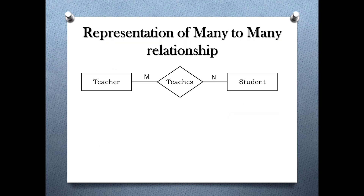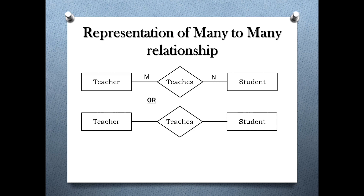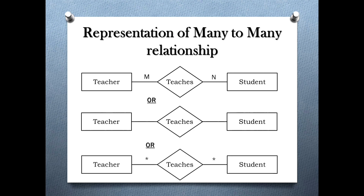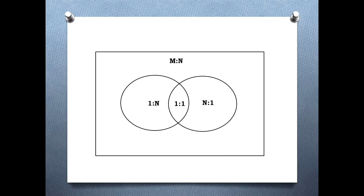Representation of many to many relationship: In an ER diagram, it is represented either by writing 'm' and 'n' on the two sides of the relationship set, or writing nothing also denotes many to many. Sometimes, an asterisk is also used. We can represent the different types of mapping cardinality using a Venn diagram — every relationship comes under many to many, and one to one relationship is the intersection of one to many and many to one.